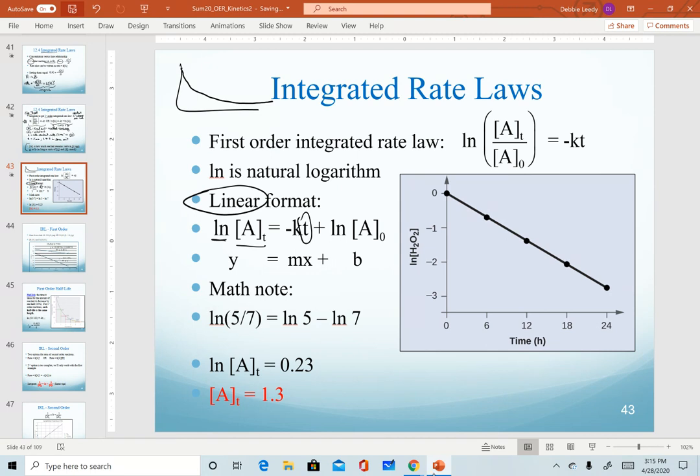And a math note for you as a reminder, when we take the natural log of a ratio, remember that this works out as subtraction. So we take the natural log of the numerator minus the natural log of the denominator. And that is how we can convert this equation into its linear format.